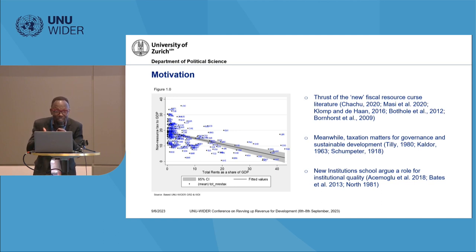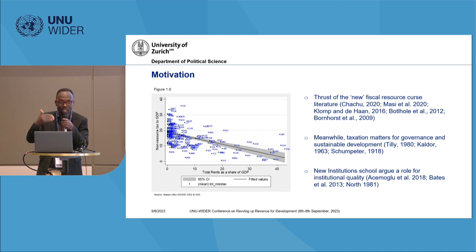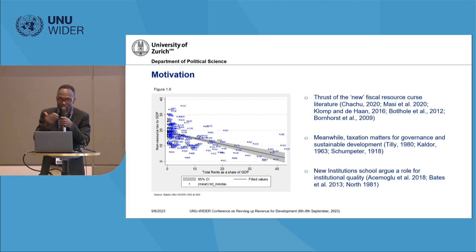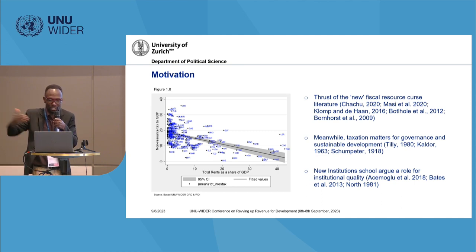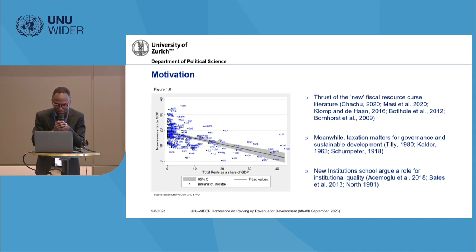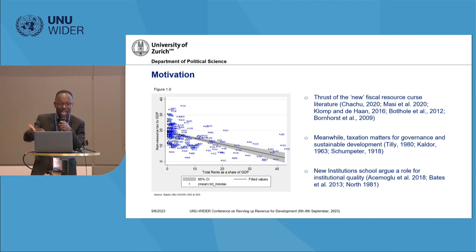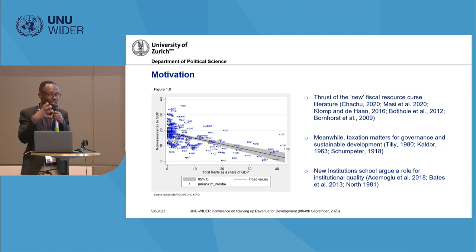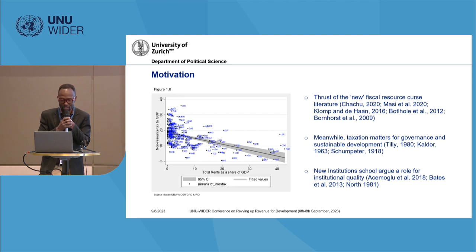If this evidence holds, then there are two challenges. If natural resource dependence actually undermines tax capacity or fiscal capacity: the first is that if these natural resources are non-renewable, there's a problem because non-renewable resources have a time horizon, and if they are no longer available, domestic revenue mobilization can be challenged. The second is that if natural resource dependence actually undermines taxation, there's a governance issue — and there's a long-established literature about the role of taxation in building state capacity and improving governance and sustainable development.